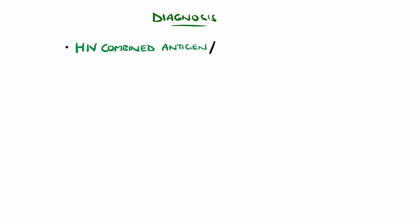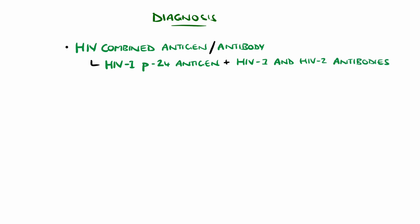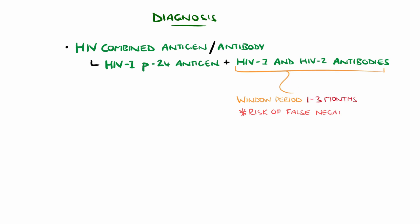If HIV is suspected, initial testing includes blood tests using HIV combined antibody and antigen testing done via ELISA, specifically HIV-1 and 2 antibodies as well as the HIV-1 P24 antigen. This is important as there is a window period in which IgG antibodies are formed, with most people taking around 4 weeks but some taking as long as 3 months to develop them. Testing antibodies alone risks a false negative result during this period, but using the P24 antigen test has reduced this window period to around 10 days, though it is generally advised to repeat testing at least 4 weeks post-exposure.